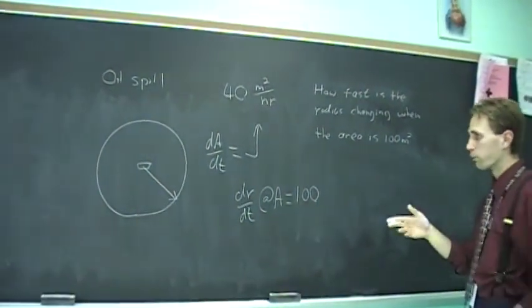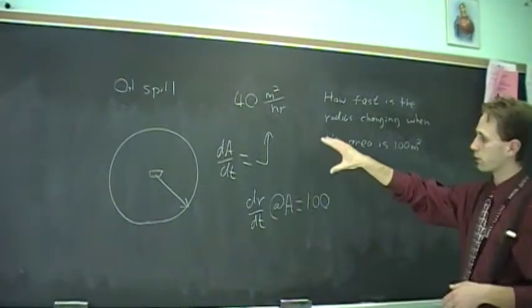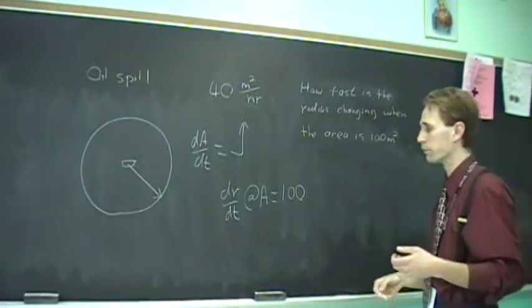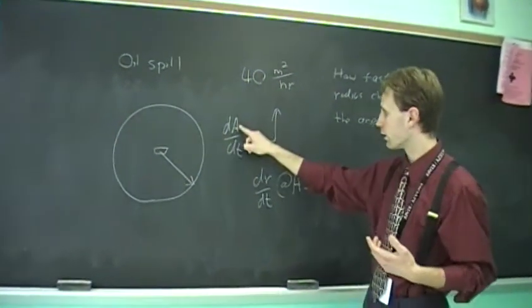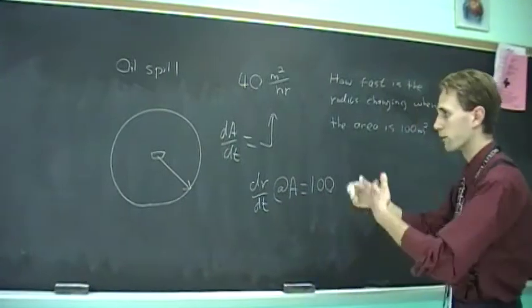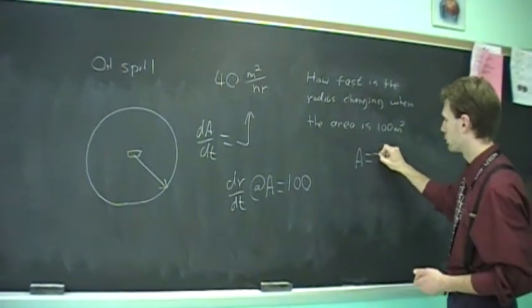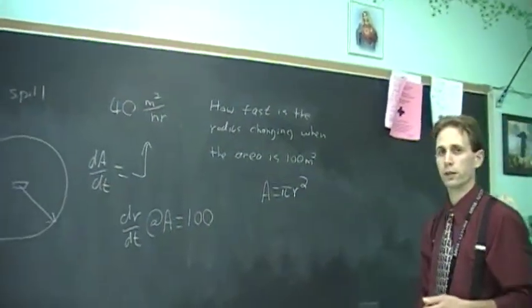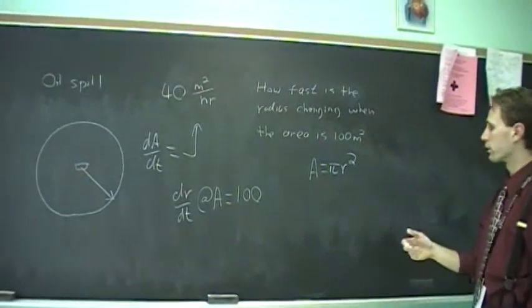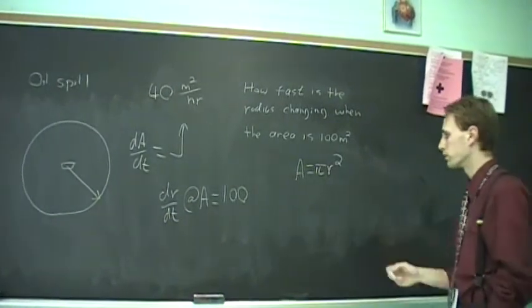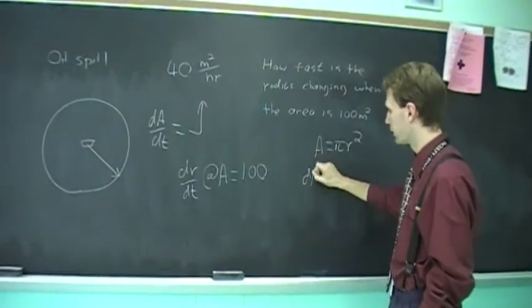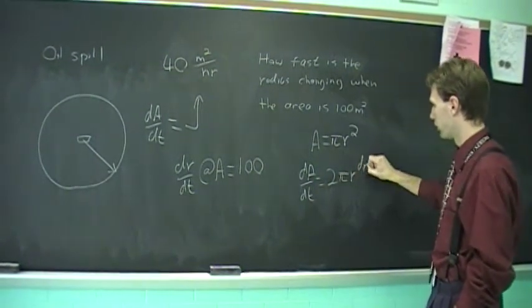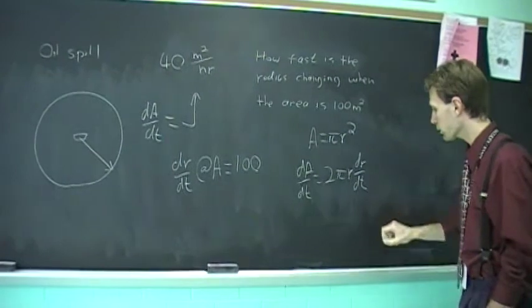Once you have a picture drawn and mapped out in math terms what they gave you and what you want, you have to find a way to connect them. So what connects A and r if you're dealing with a circle? Area equals πr², where both A and r are functions of time. To figure out the relationship, you differentiate with respect to time.